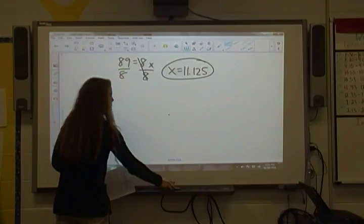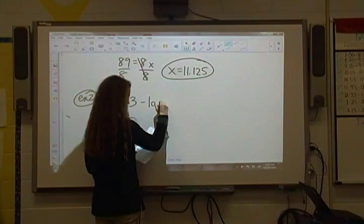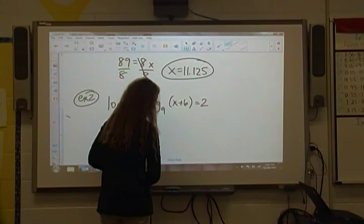Next example. We've got log base 9 of 3 minus log base 9 of x plus 6 is equal to 2. So now we have a subtraction sign, which really means that we're going to divide.